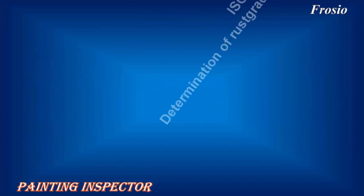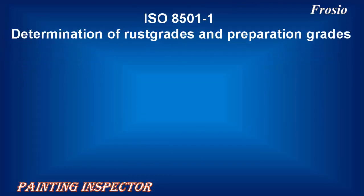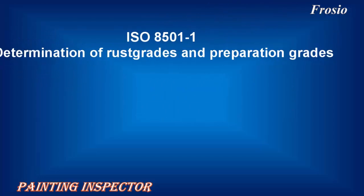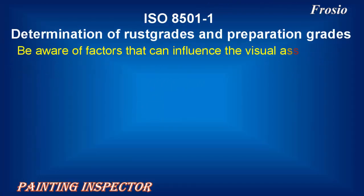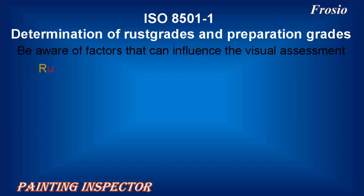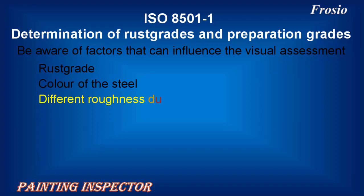When using ISO 8501-1 for the determination of rust grades and preparation grades, be aware of factors that can influence the visual assessment. These include the rust grade, the color of the steel, and different roughness due to corrosion attack.